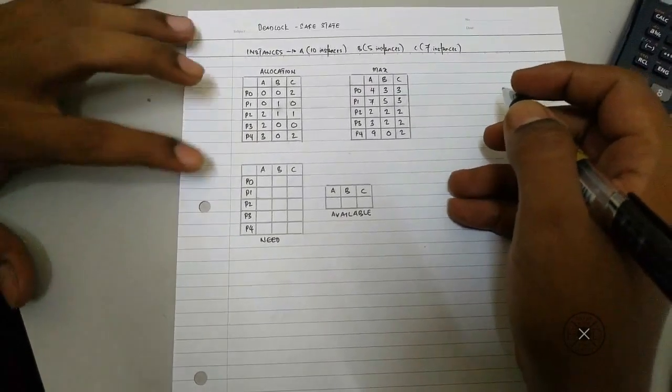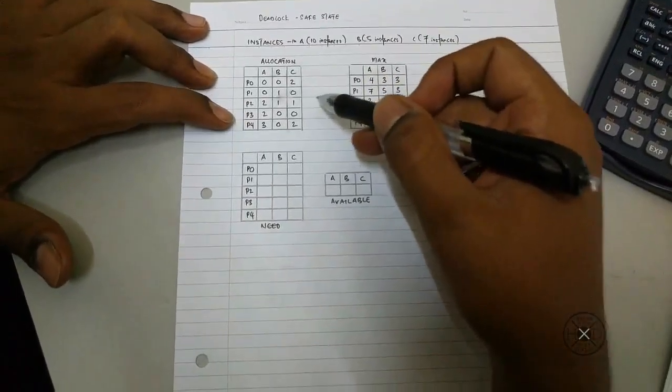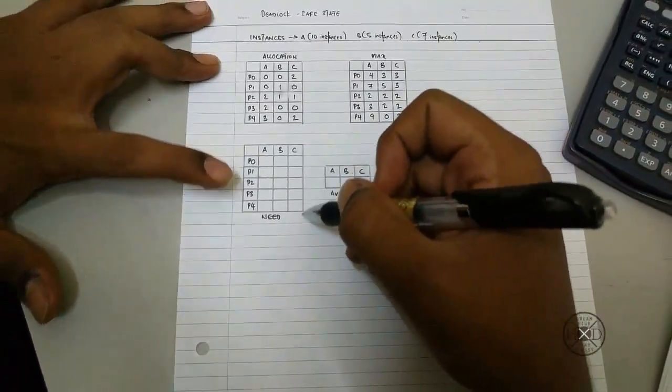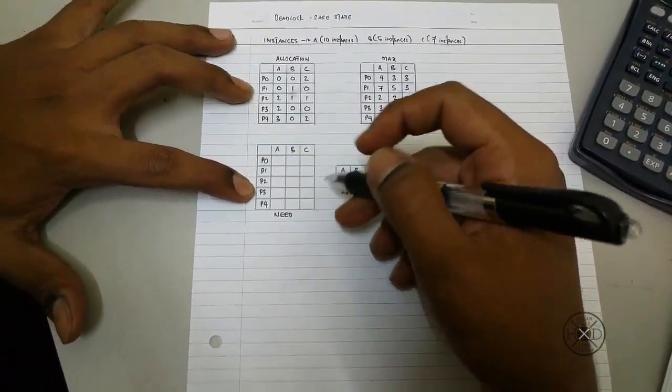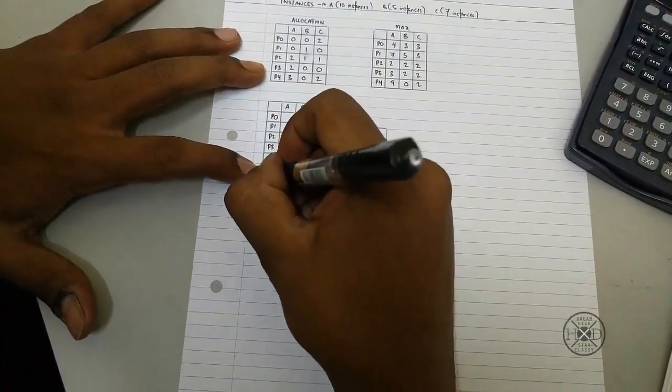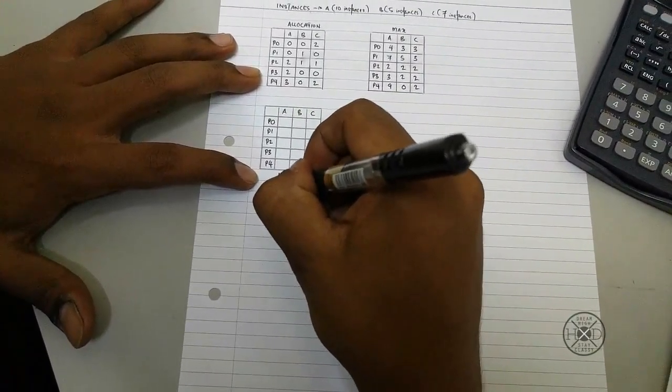Now I am going to teach about deadlock safe state. We have an allocation table and a max table. So we need a need table for the formula is max minus allocation.